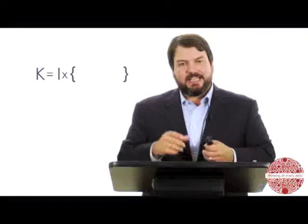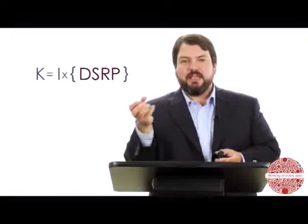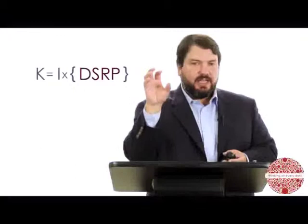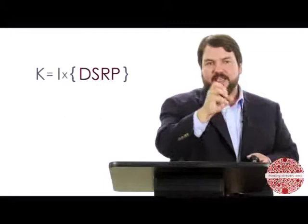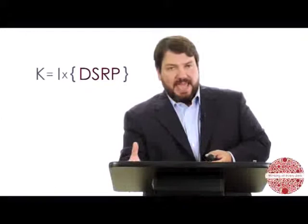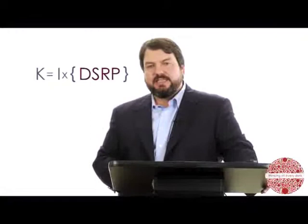Knowledge is equal to information times thinking — this is a universal theory of education that guides everything we do. Using the K equals I times T equation, we've been able to define what T is by putting in the brackets: D, S, R, and P. D, S, R, and P are the four universal ways that we structure information. We take everything coming at us through our senses and structure it using these four universal patterns, turning information into knowledge.